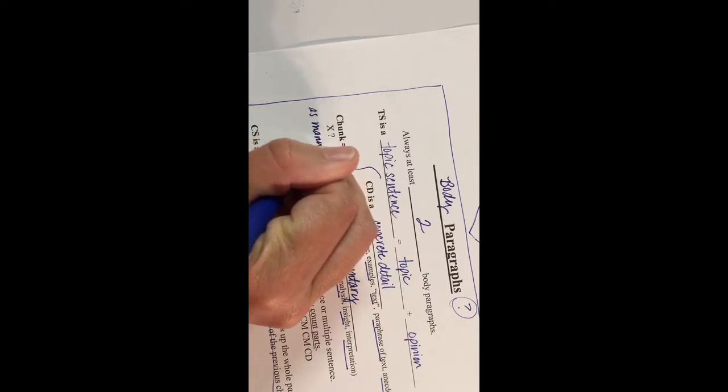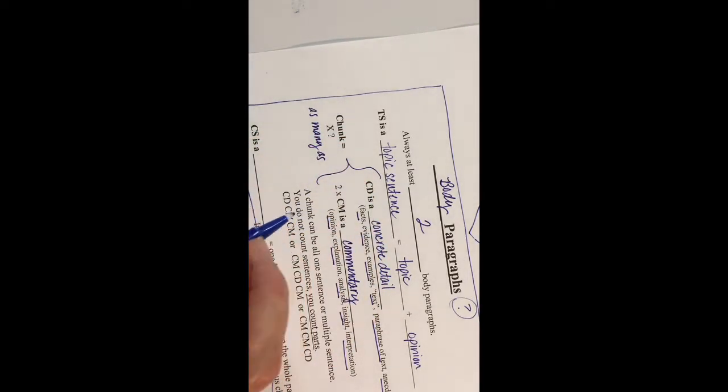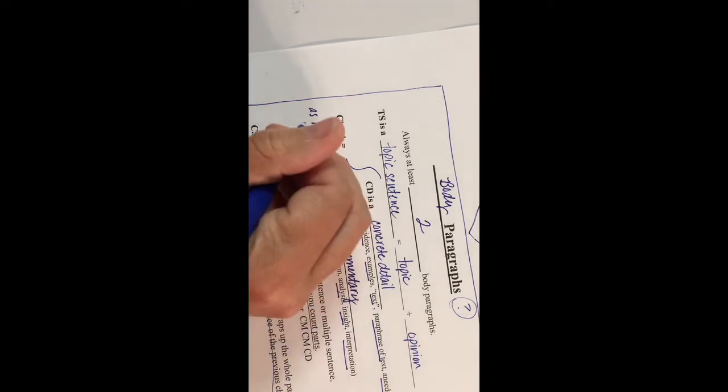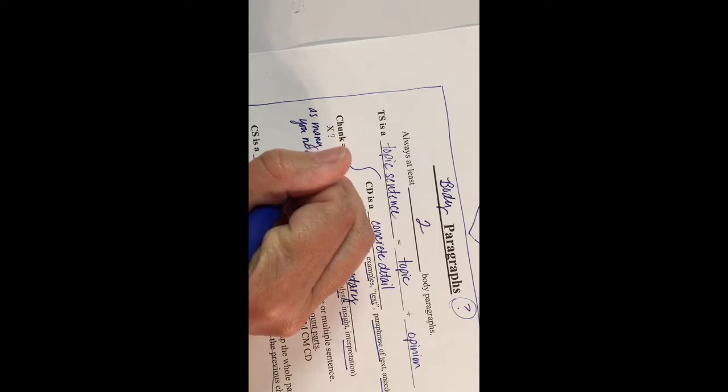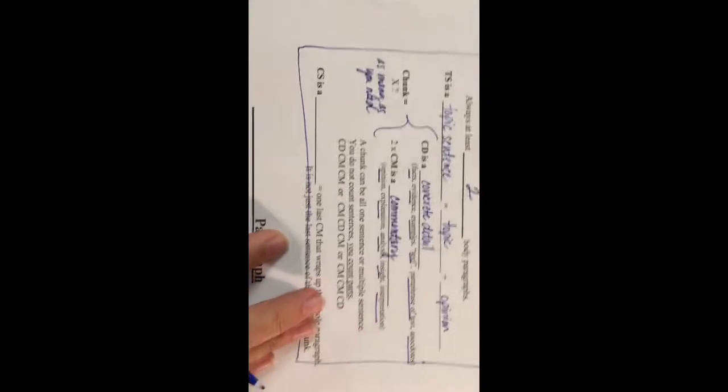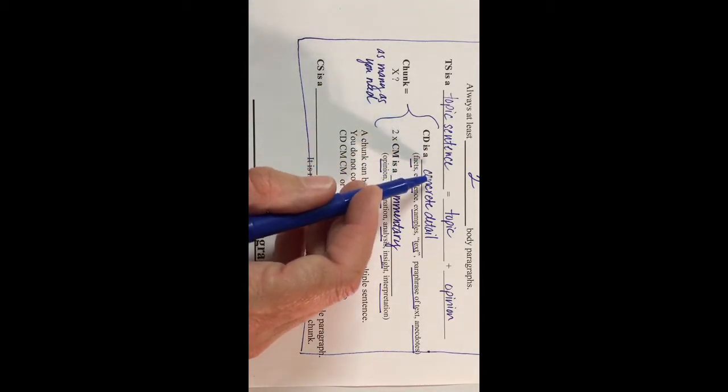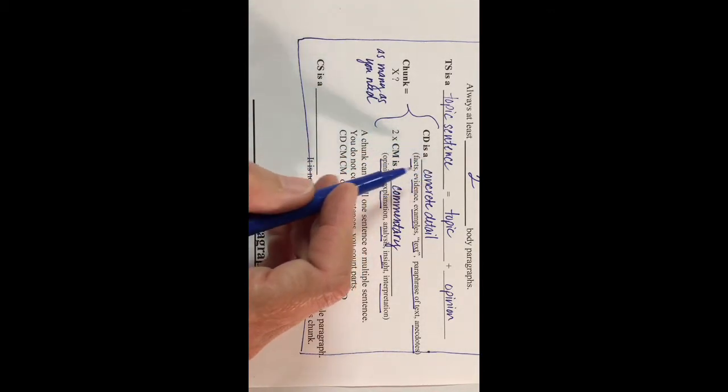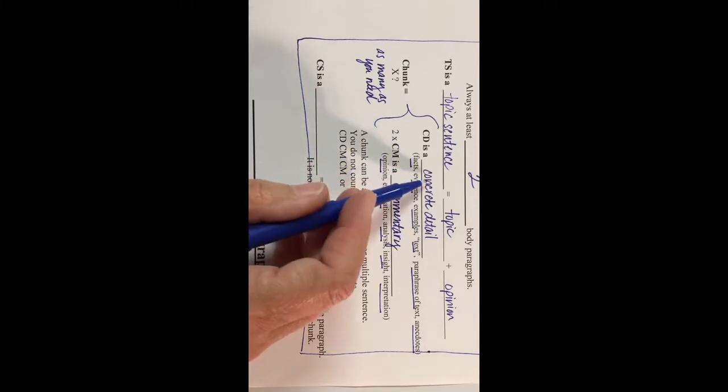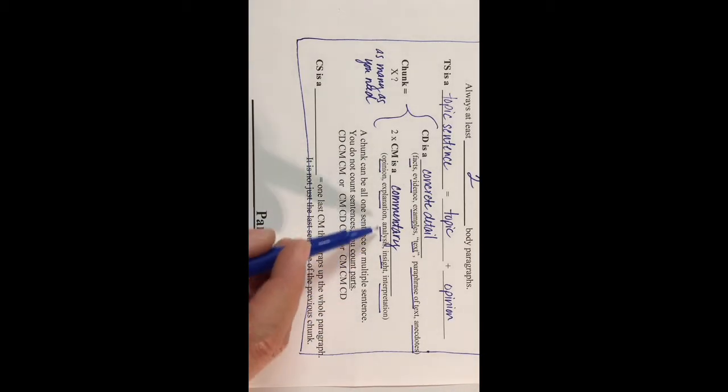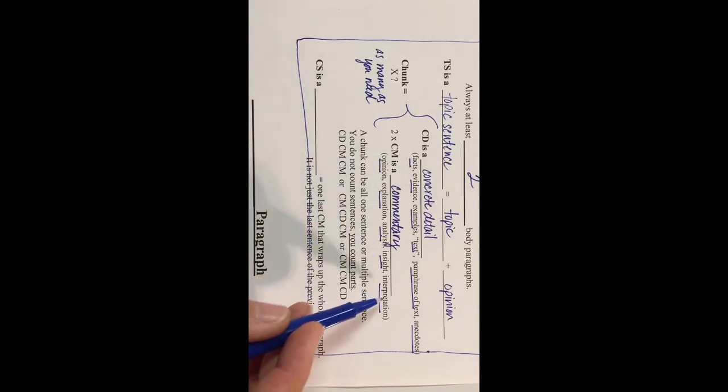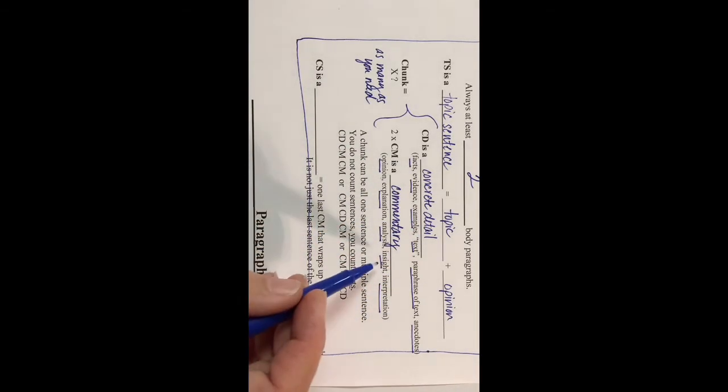Sometimes I'm bossy and I'll dictate—I'll say I want two chunks in this paragraph or three. As many as you need, though, if your teacher's not bossy. A chunk can be one sentence or multiple sentences. You could have a CD that's three or four sentences long to explain the part of the story, and your CMs can be as many sentences you like—just two thoughts explaining the concrete detail, analyzing it, or interpreting what that concrete detail meant.